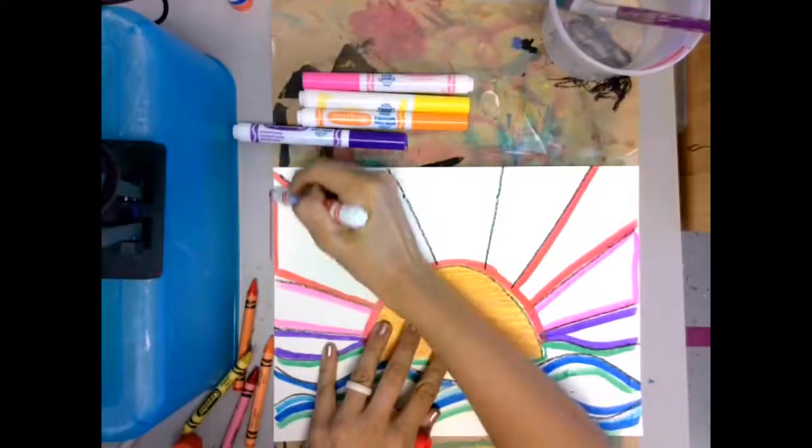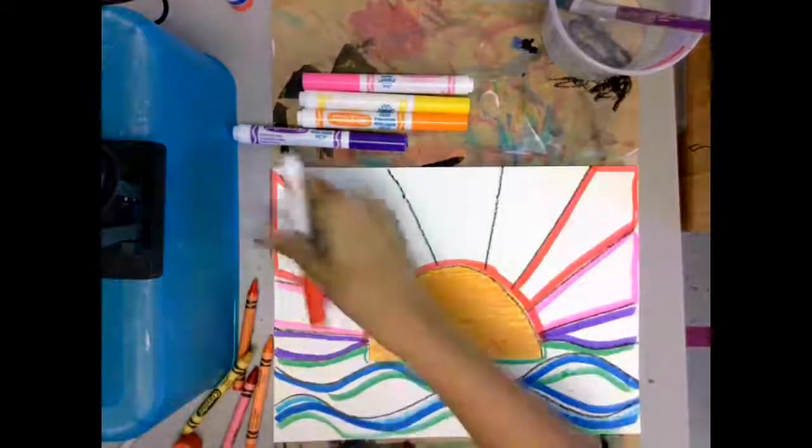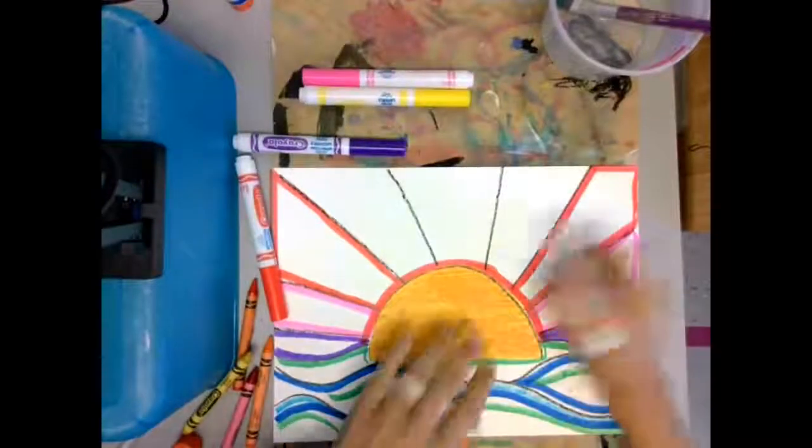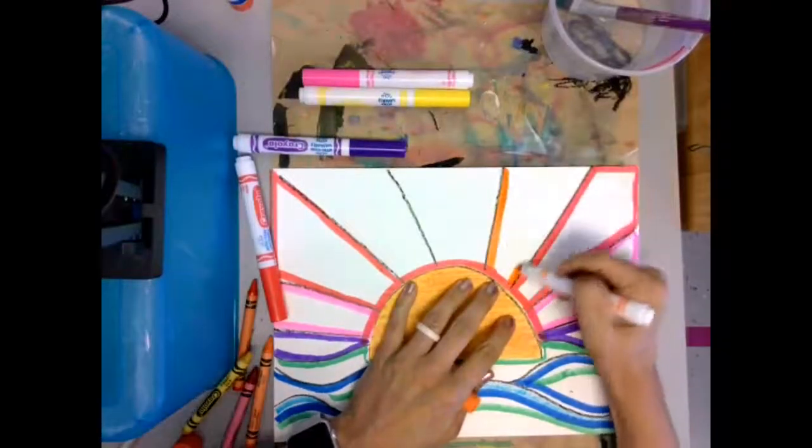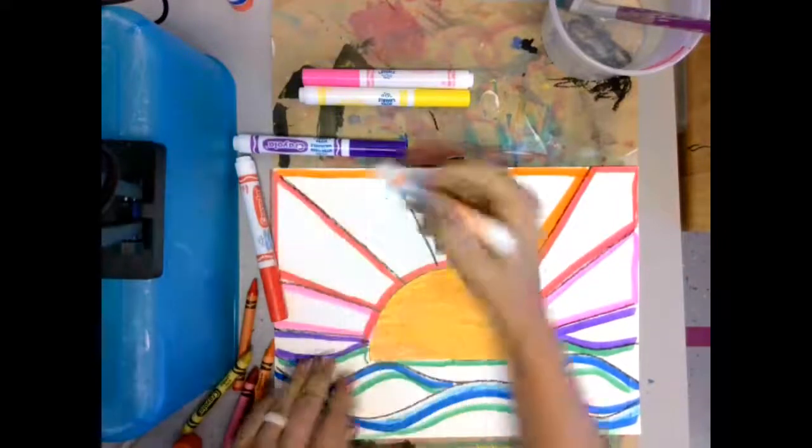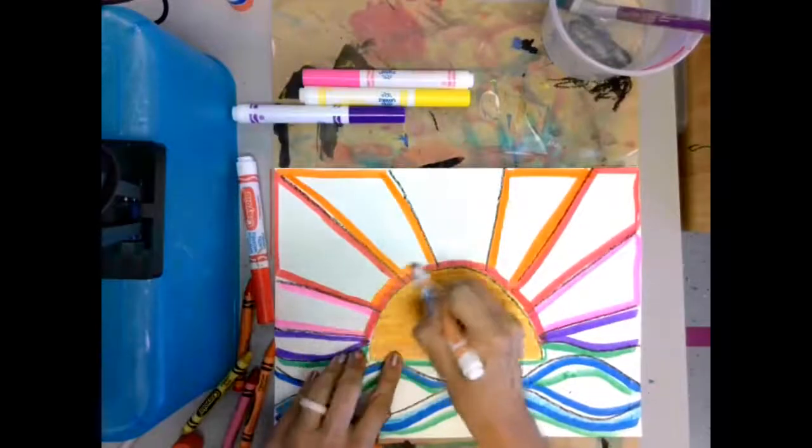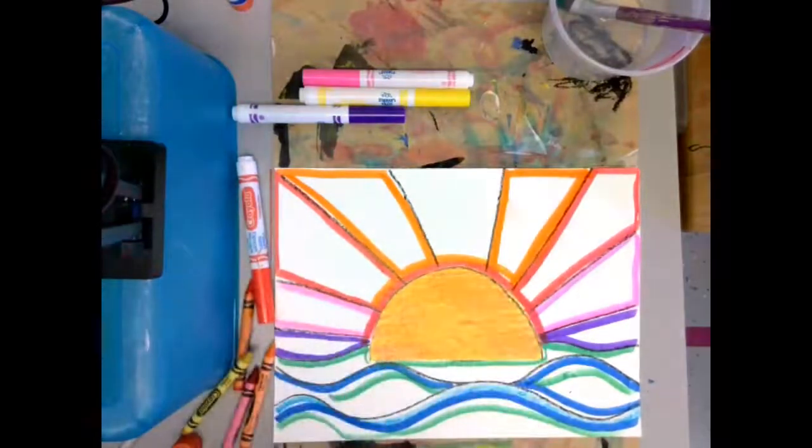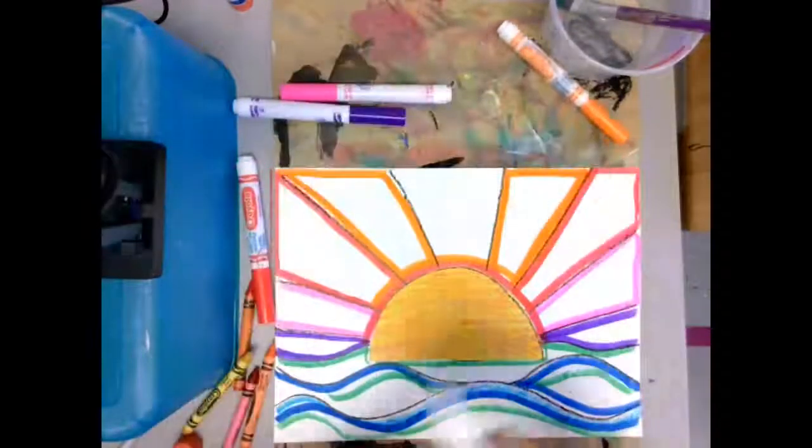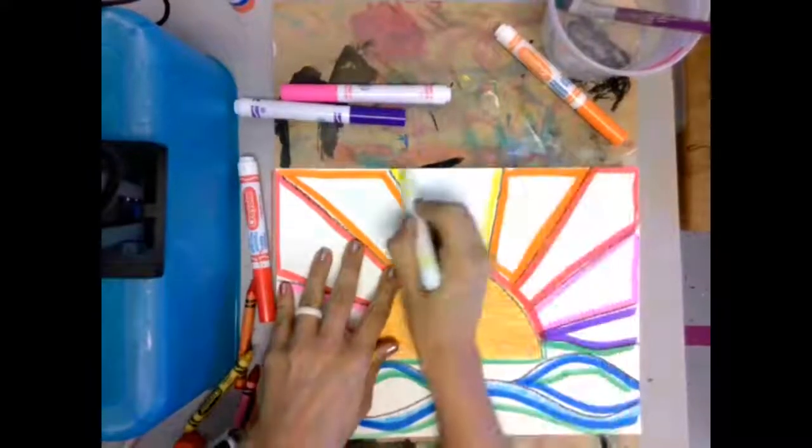These are just regular old washable Crayola markers. And notice I'm not coloring in. I'm just using my fat side of my marker color to outline all of my sections. And I have one more. And I think I'm going to use my yellow. That's looking pretty good.